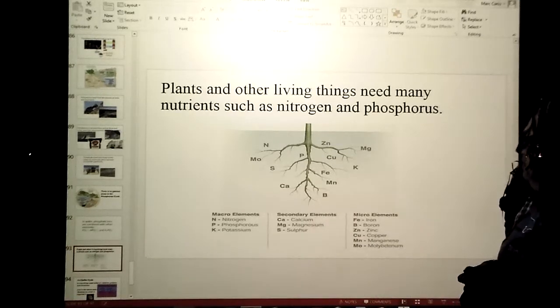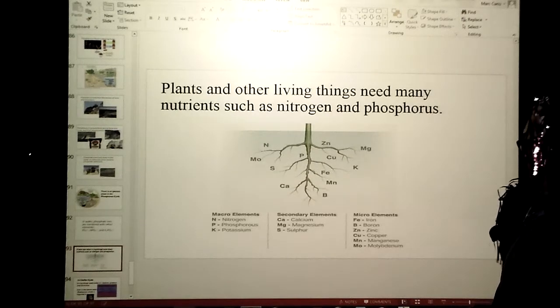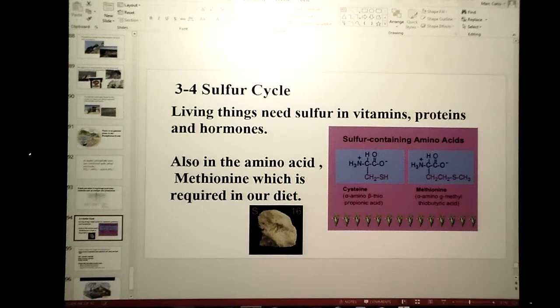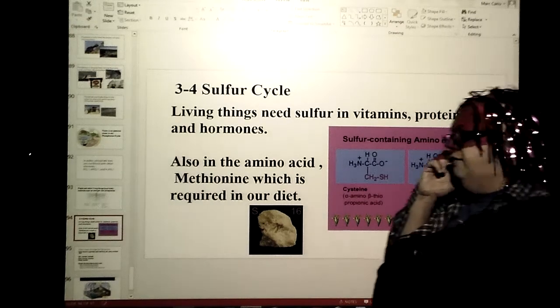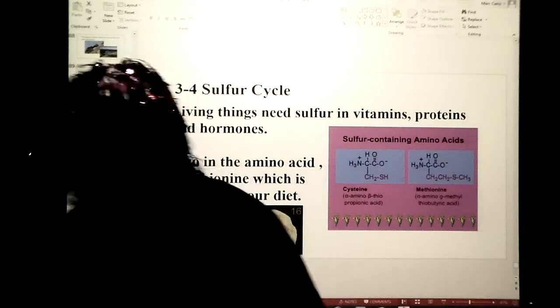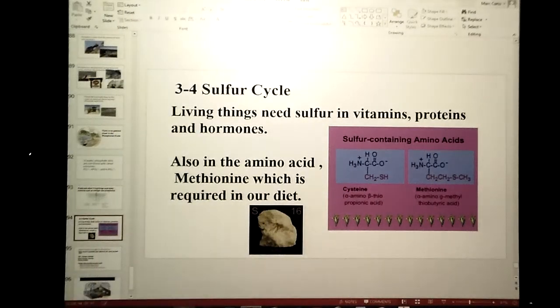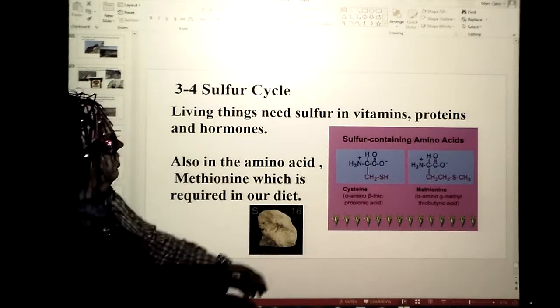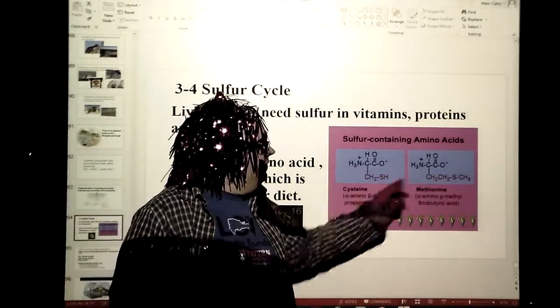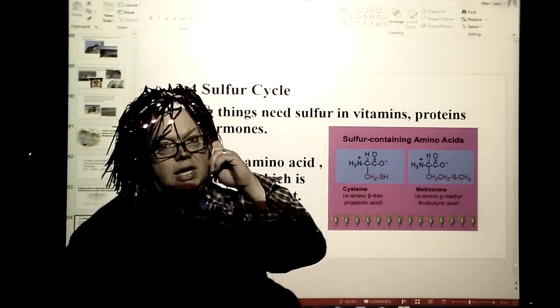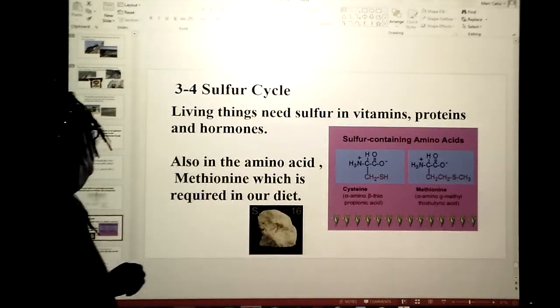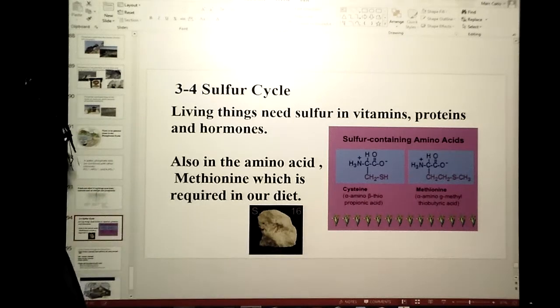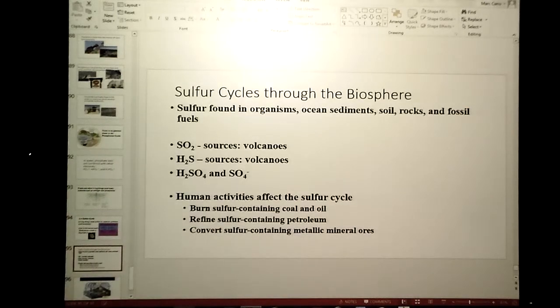Sulfur cycle, we gotta wrap up. Of course sulfur is part of things like vitamins, hormones which is a kind of protein, proteins. You also have amino acids that do have sulfur in there like cysteine and methionine as well. That is part of our diet. Sulfur is that nice yellow stuff on there, it goes through the biosphere.